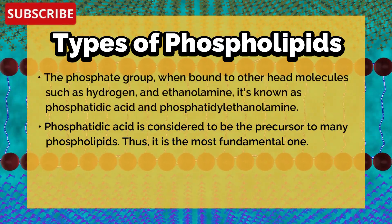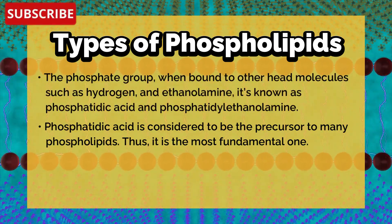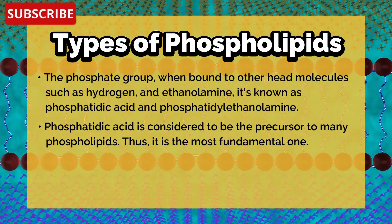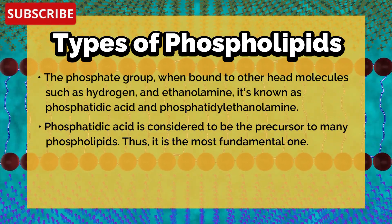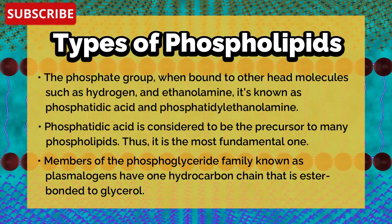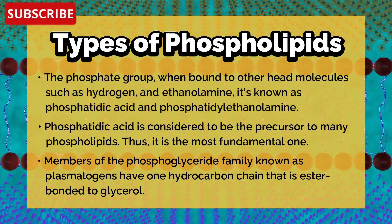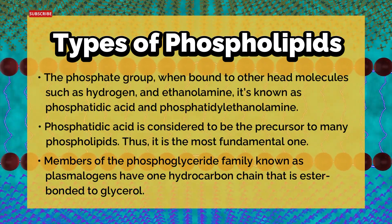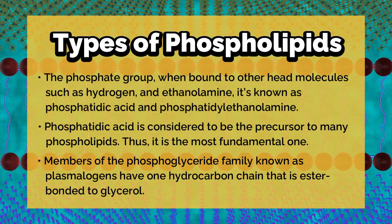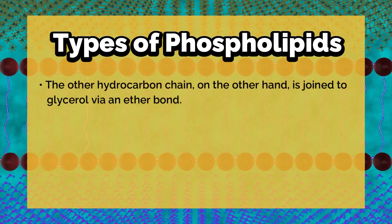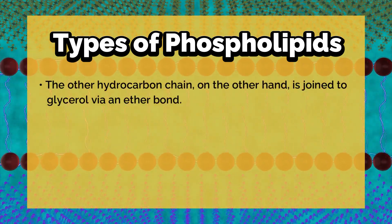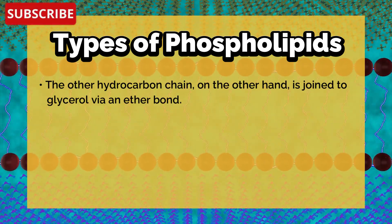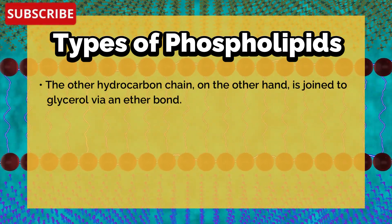Phosphatidic acid is considered to be a precursor to many phospholipids and is the most fundamental one. Members of the phosphoglyceride family known as plasmalogens have one hydrocarbon chain that is ester-bonded to glycerol, while the other hydrocarbon chain is joined to glycerol with the help of an ether bond.